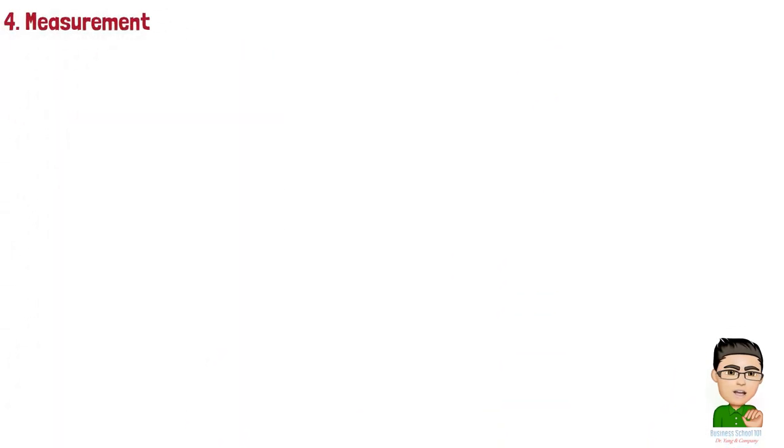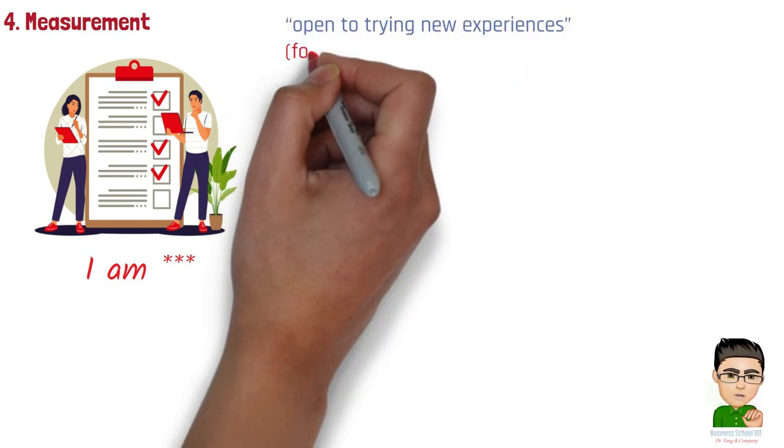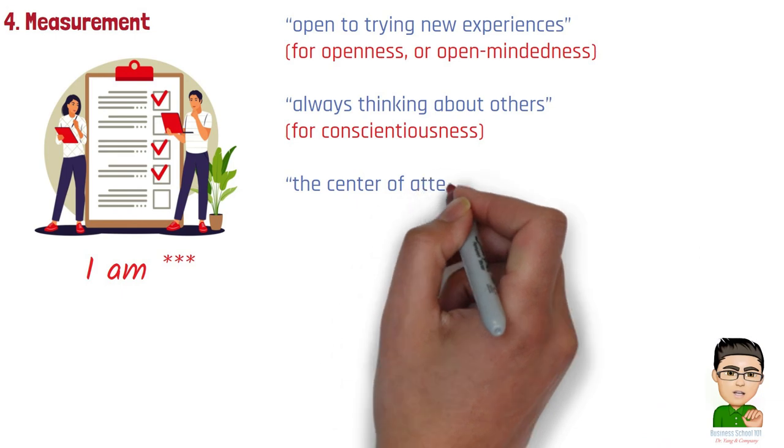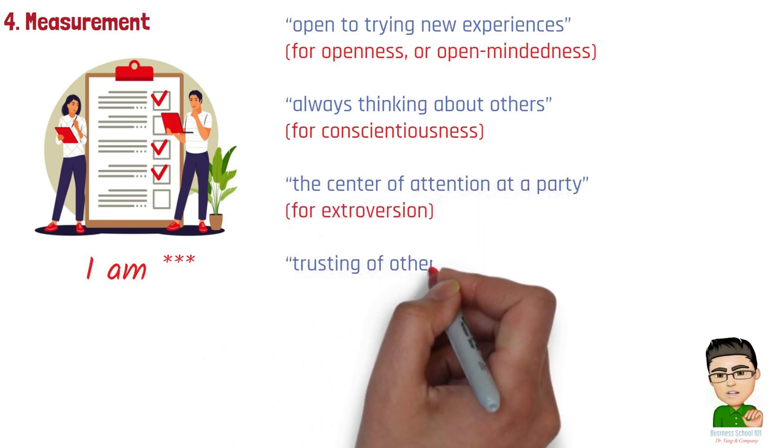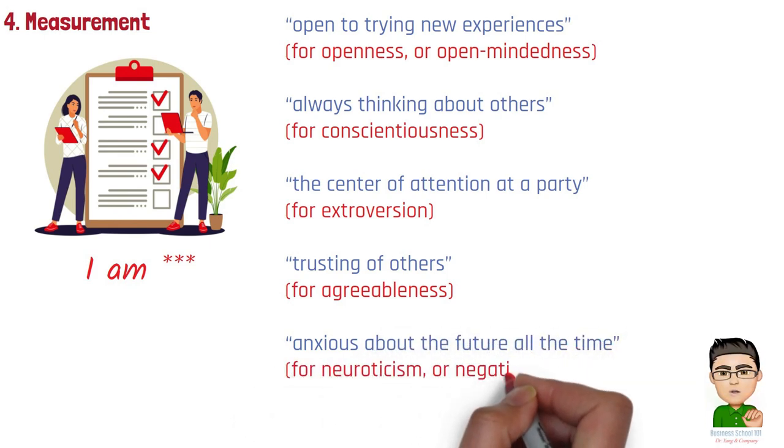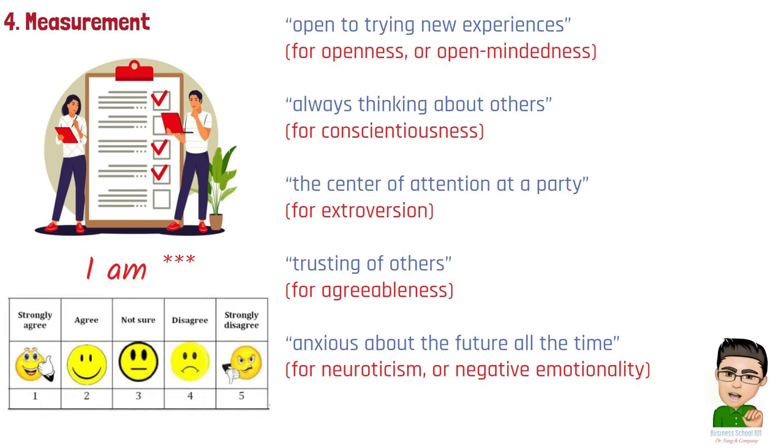Section 4. Measurement. Traditionally, the big five personality test is taken with a questionnaire and a multiple-choice response. For example, these questions will ask how much a person agrees or disagrees that he or she is someone who exemplifies various specific statements, such as: Open to trying new experiences for openness, always thinking about others for conscientiousness, the center of attention at a party for extroversion, trusting of others for agreeableness, and anxious about the future all the time for neuroticism. The responses from strongly agree to strongly disagree, with alternatives in between, will determine to what scale the person may be grouped into different personality traits.